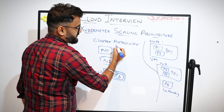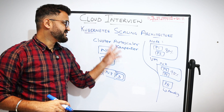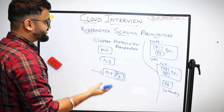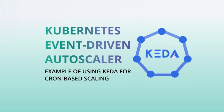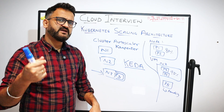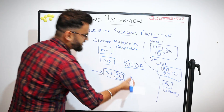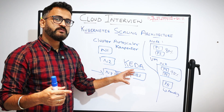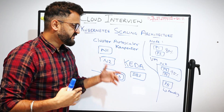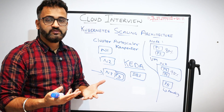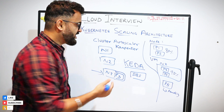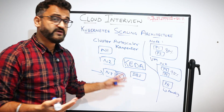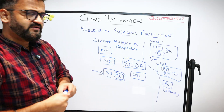There is also Karpenter, a newer utility that is faster than the Cluster Autoscaler — both are important concepts for pod-level versus node-level scaling. Additionally, there is KEDA (Kubernetes Event-Driven Autoscaling), which scales based on events — for example, connecting it to SQS (Amazon Simple Queue Service). If your Kubernetes cluster is fed via a message queue and that queue crosses a certain threshold, scaling is triggered. Even just naming KEDA in an interview makes a strong impression.